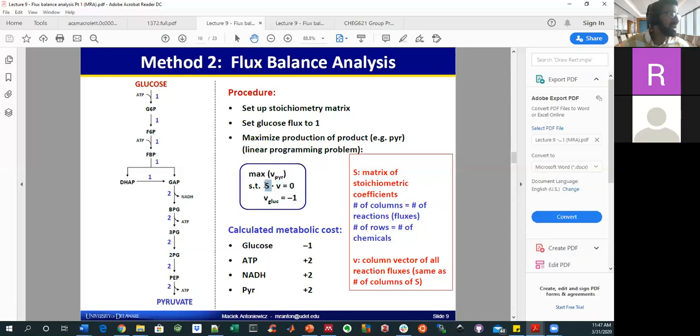And you'll see where that comes in. What you also have is your stoichiometric matrix, which is just your stoichiometric coefficients, where columns are the number of reactions. And then your rows are based on the number of chemicals. And then you have this flux vector.